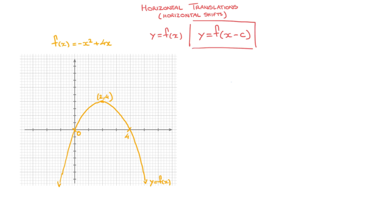In just a few seconds, I'll work through a couple of examples to show exactly how this transformation works. We can tell right away that we're dealing with a horizontal transformation because the only change we're making between f of x and f of x minus c takes place inside the parentheses — we're replacing x by x minus c. In other words, we're changing the input value of the function, and when we do that, the transformation will always be horizontal.